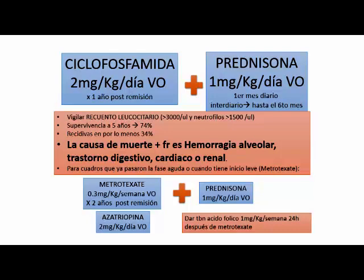En el caso de la poliangiitis microscópica, la causa de muerte más frecuente es hemorragia alveolar. Estas son las clásicas hemoptisis que hacen hemorragia alveolar difusa donde el paciente se ahoga en sangre. También trastorno digestivo, cardíaco o renal son causas, pero la más frecuente es la hemorragia alveolar. El tratamiento incluye metotrexato, ciclofosfamida asociada siempre a prednisona: un mes diario e interdiario hasta el sexto mes. La prednisona: un miligramo por kilo de peso en forma consistente y permanente.